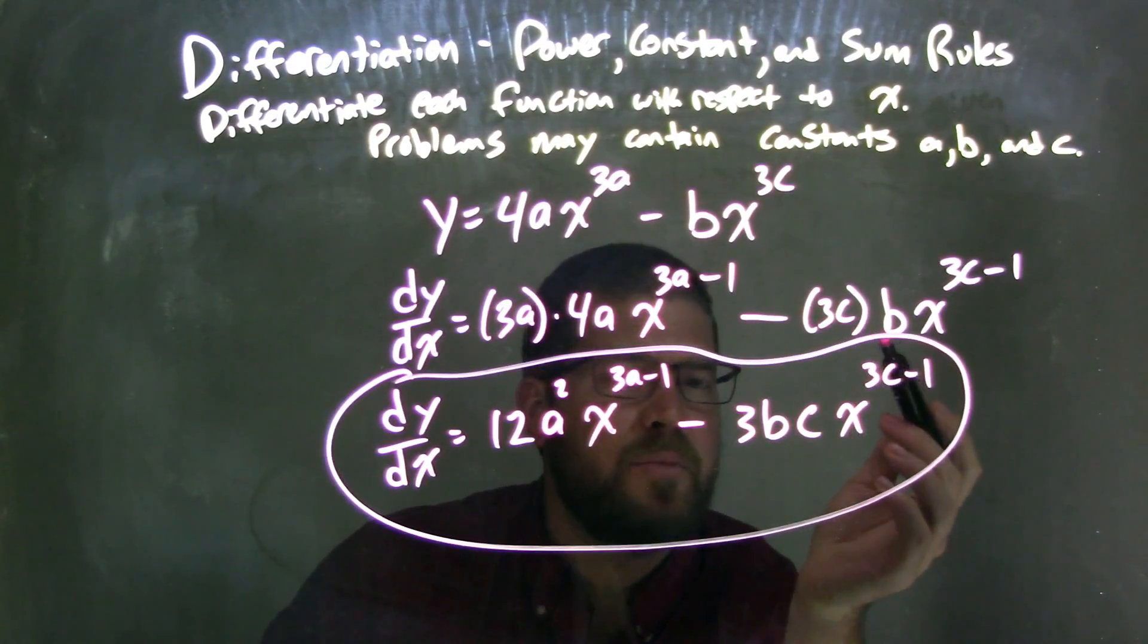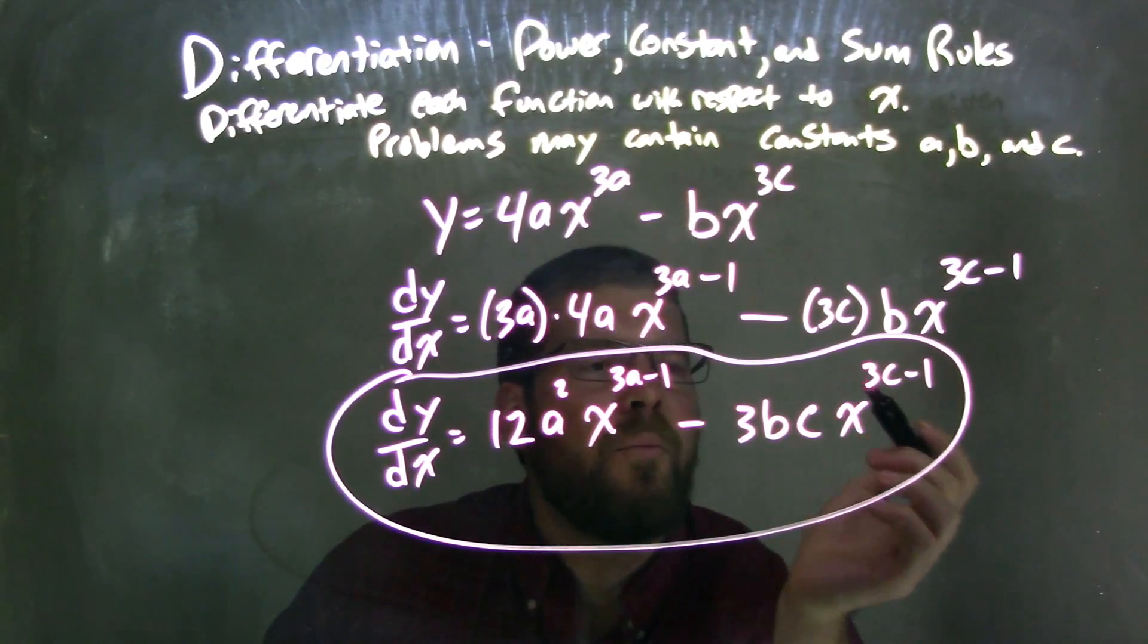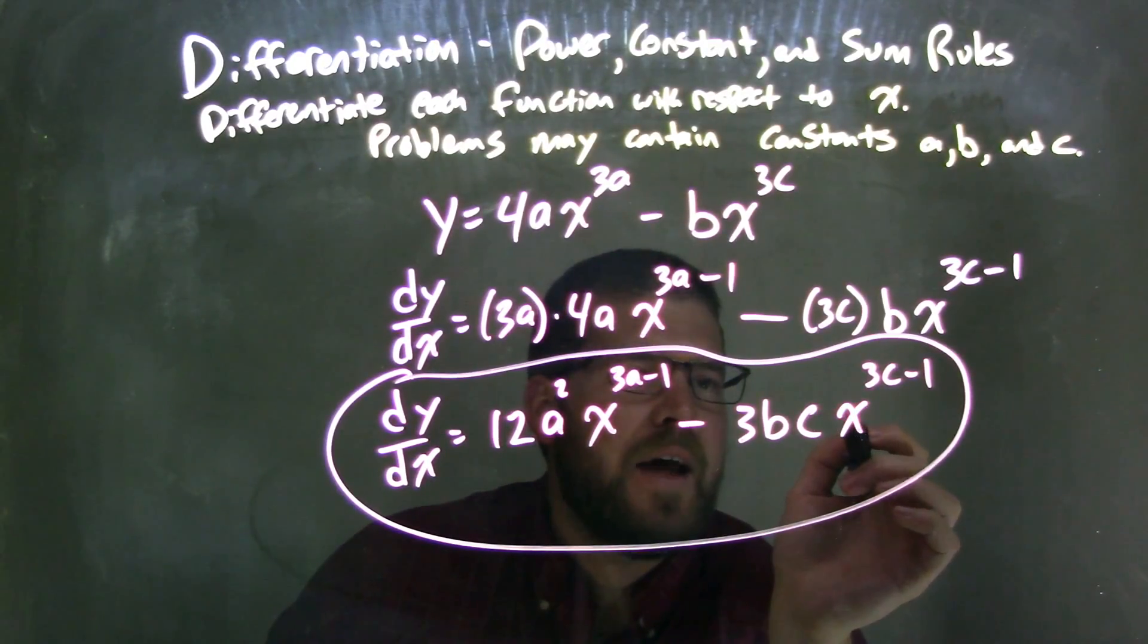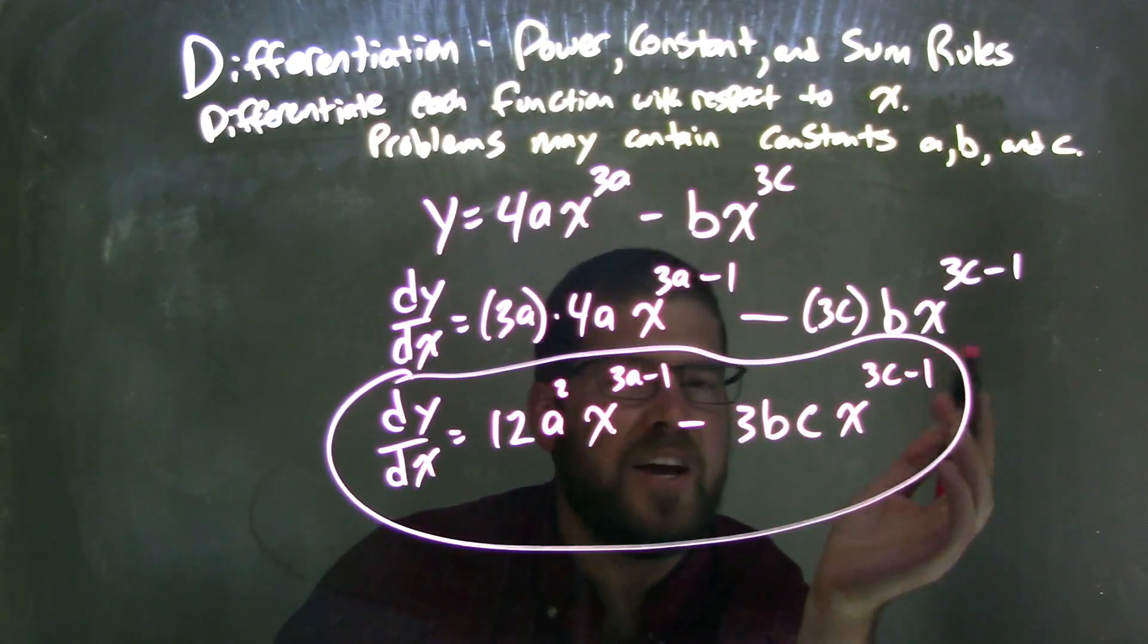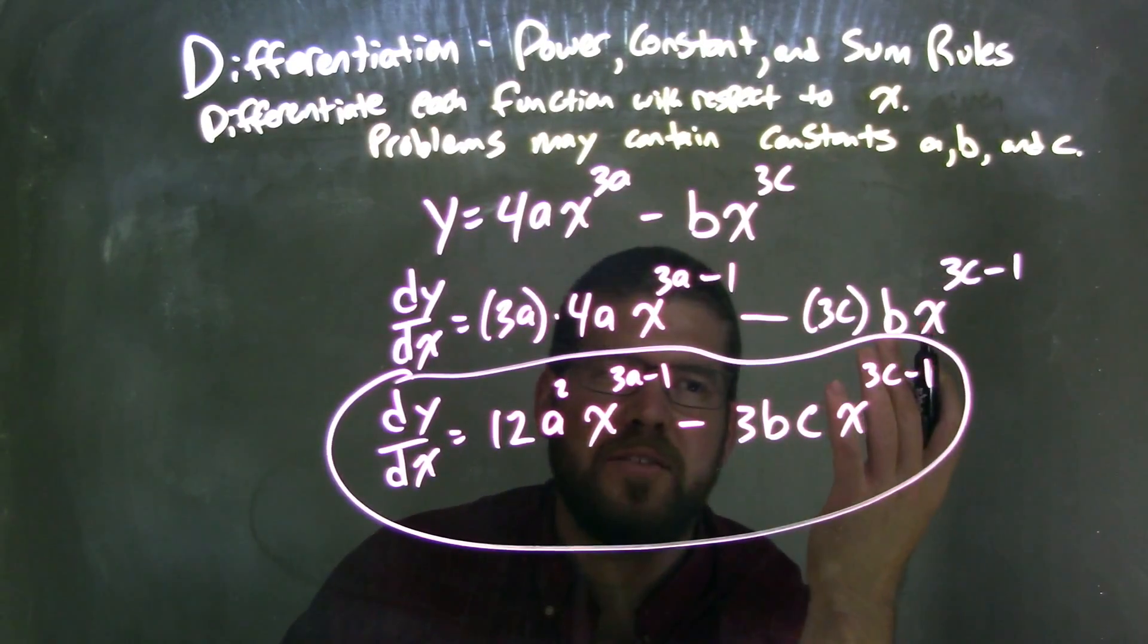3 times c times b is rearranged in alphabetical order, 3bc here, but we don't know what b times c is, but basically that's bc. And so now we have the x to the 3c minus 1. That doesn't change because I don't know what 3c minus 1 is. It just says, whatever 3c minus 1 is, whatever that value is, is our exponent.